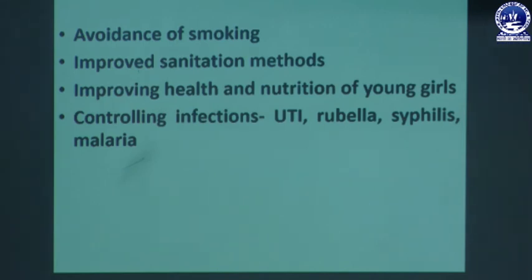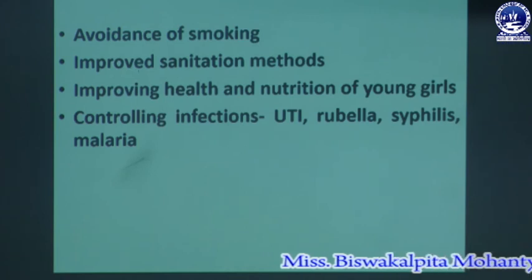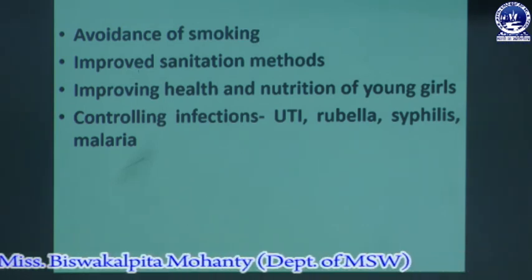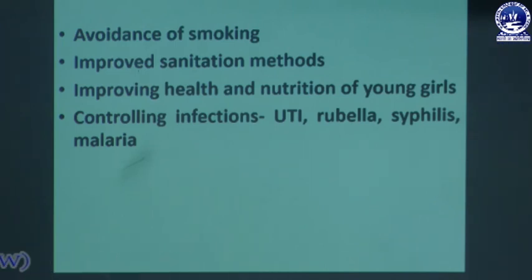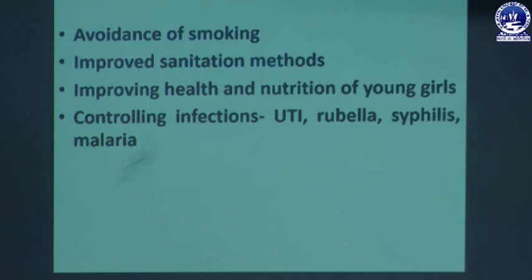Controlling infections such as UTI (urinary tract infections caused by bacteria), Rubella (a type of measles), Syphilis (a bacterial infection spread by sexual contact), and Malaria is important. These infections can create barriers to the growth and development of the baby in the womb. The mother must avoid and stay away from these infections to prevent low birth weight in her child.